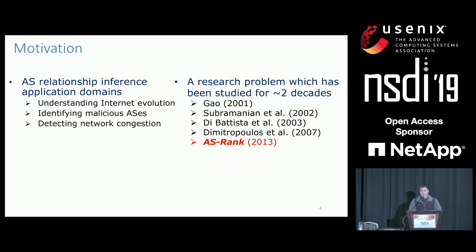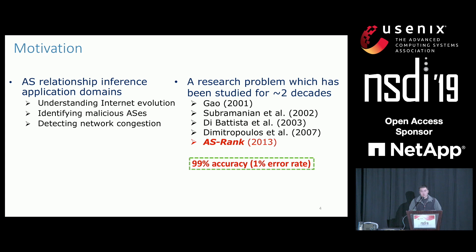AS relationship inference is used in a wide range of application domains, such as understanding internet evolution, identifying malicious ASes, and detecting network congestion. It's actually a research problem which has been studied for almost two decades, starting with the seminal work by Gao in 2001. The state-of-the-art inference algorithm, called AS rank, achieves 99% accuracy, which translates to only 1% error rate on an extensive validation dataset.